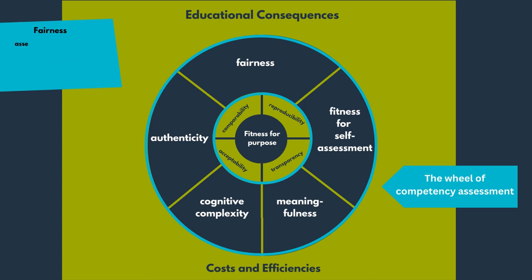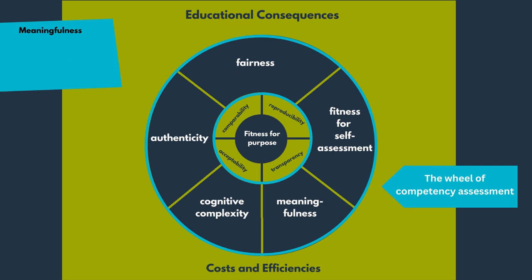Fairness specifies that an assessment should not show bias to a certain group of learners. Possible causes of bias are improper adjustment to the educational level of learners or tasks containing cultural aspects that not all learners are familiar with. A possible way to increase meaningfulness is to involve learners in the development of the assessment process and to allow learners to perceive a link between the assessment task and personal interests. An assessment might also become more valuable to learners when they themselves can determine when they are ready to take the assessment.